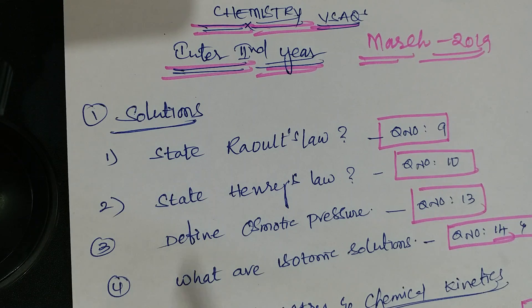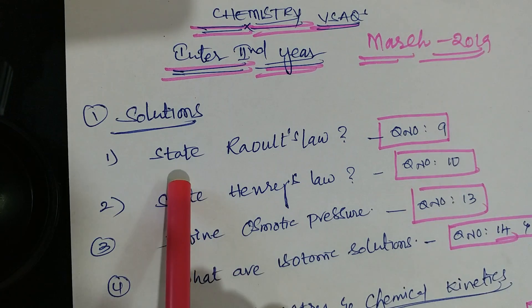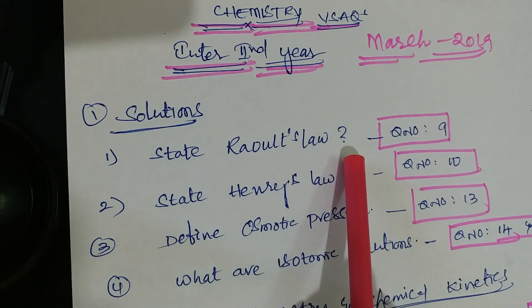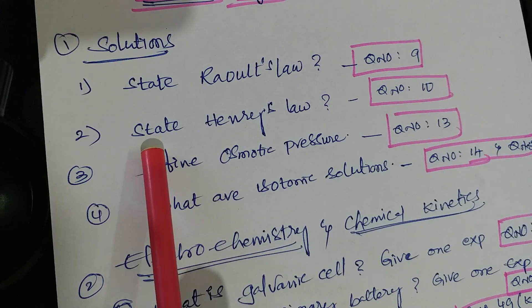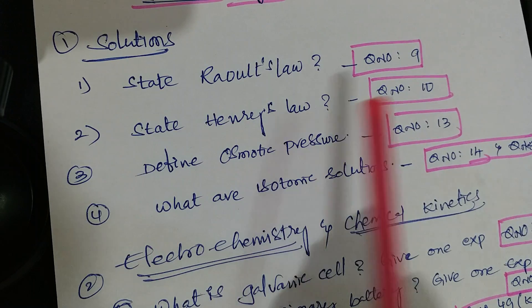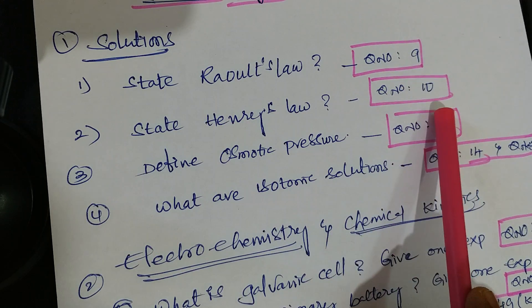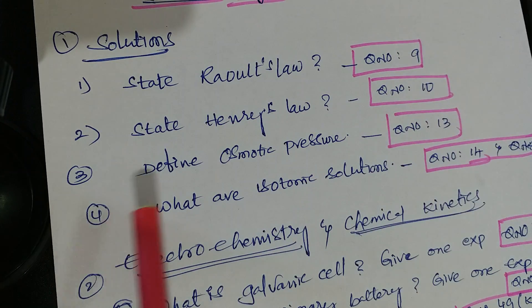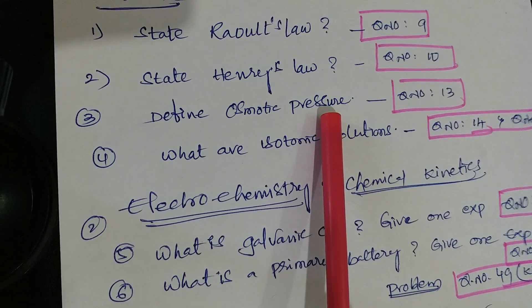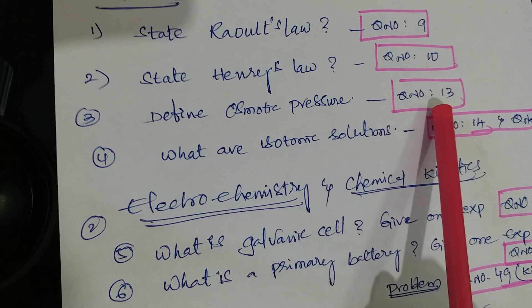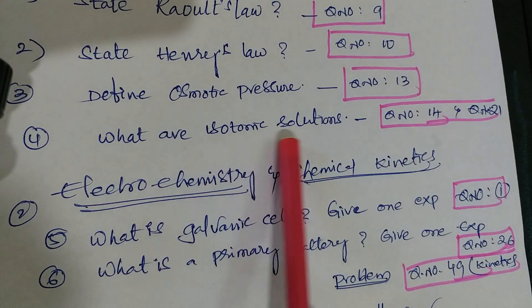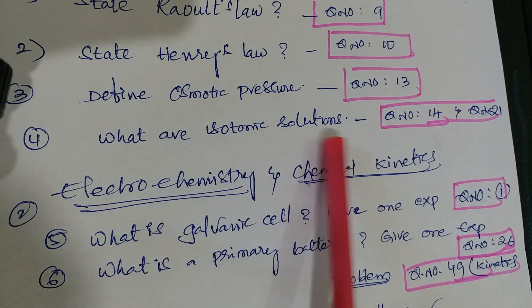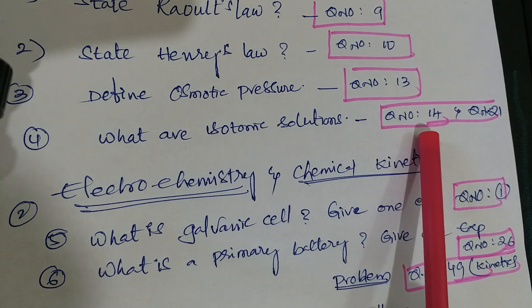In the Solutions lesson, first one: state Raoult's law - that is question number 9. Second question: state Henry's law - question number 10. Third one: define osmotic pressure - that is question number 13. Next question: what are isotonic solutions - that is question number 14 and question number 21.